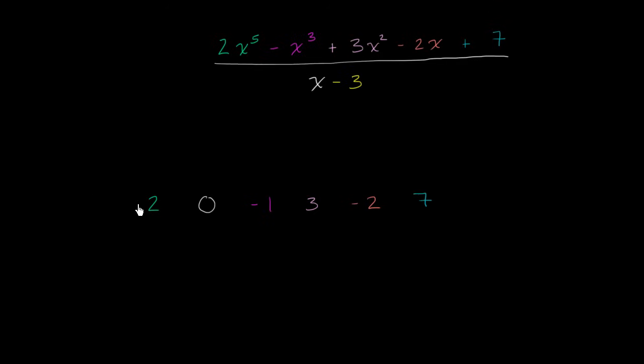And now let me just draw my little funky synthetic division operator looking symbol. And remember, the type of synthetic division we're doing, it only applies when we're dividing by an x plus or minus something. There's a slightly different process you would have to do if it was 3x, or if it was negative 1x, or if it was 5x squared. This only works when we have x plus or minus something.